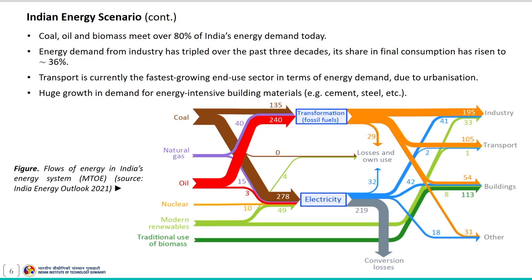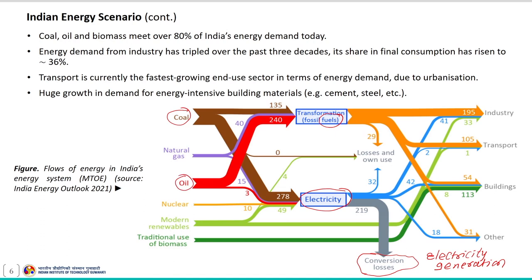This schematic shows the flows of energy in India's energy system, including various transformation processes for fuel and for electricity, and also shows the substantial conversion losses that occur in the process of electricity generation. As per this schematic, coal, oil, and biomass meet over 80 percent of India's energy demand, which is why the share of fossil fuel in the primary energy mix has remained at around 80 percent over several decades.